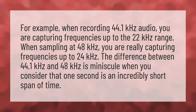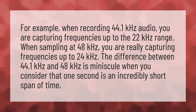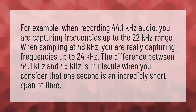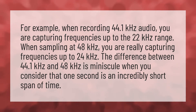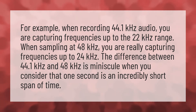For example, when recording 44.1 kilohertz audio, you are capturing frequencies up to the 22 kilohertz range. When sampling at 48 kilohertz, you are really capturing frequencies up to 24 kilohertz. The difference between 44.1 kilohertz and 48 kilohertz is minuscule when you consider that one second is an incredibly short span of time.